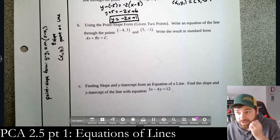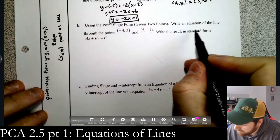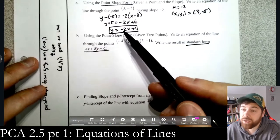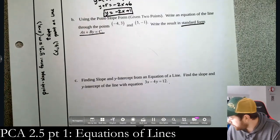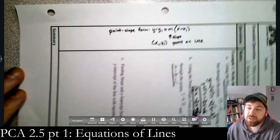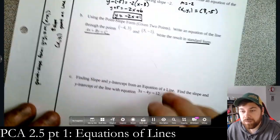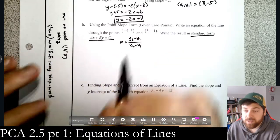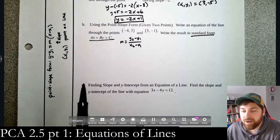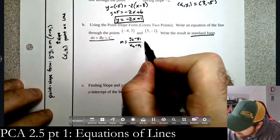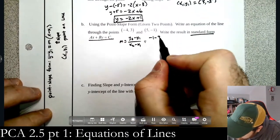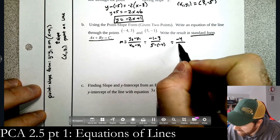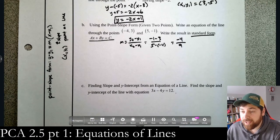Next example: use point-slope form given two points — write an equation of the line through (-4, 3) and (5, -1), with the result in standard form (ax + by = c). We don't have the slope yet, so we use the slope formula: (y₂ - y₁) over (x₂ - x₁). That gives us (-1 - 3) over (5 - (-4)), which is -4 over 9. So our slope is -4/9.